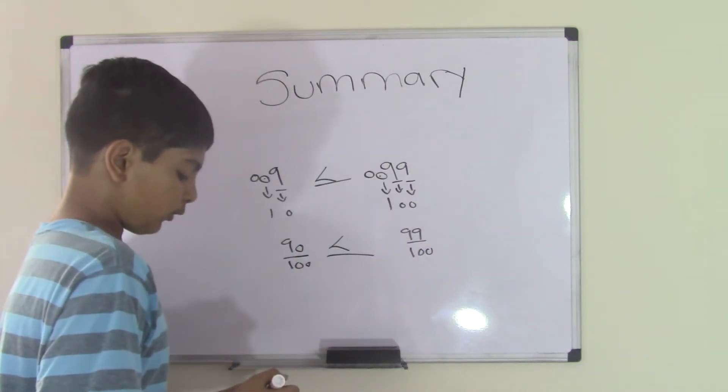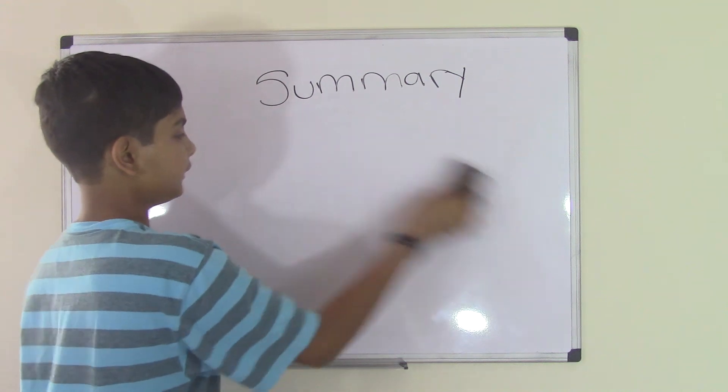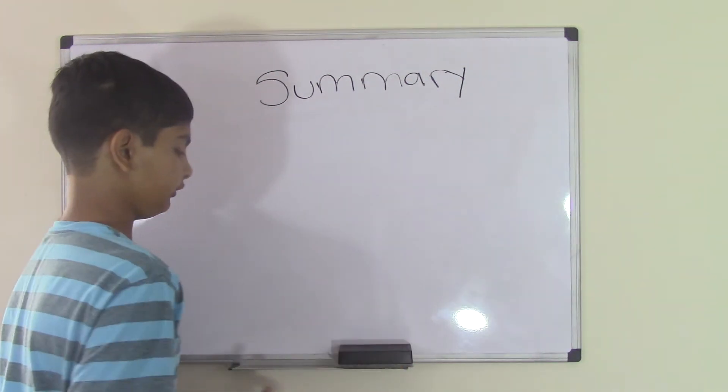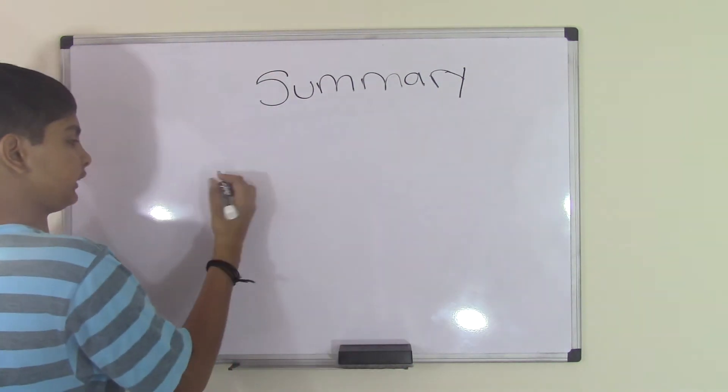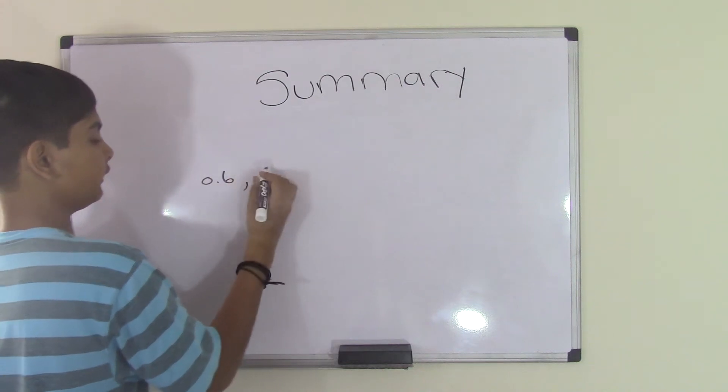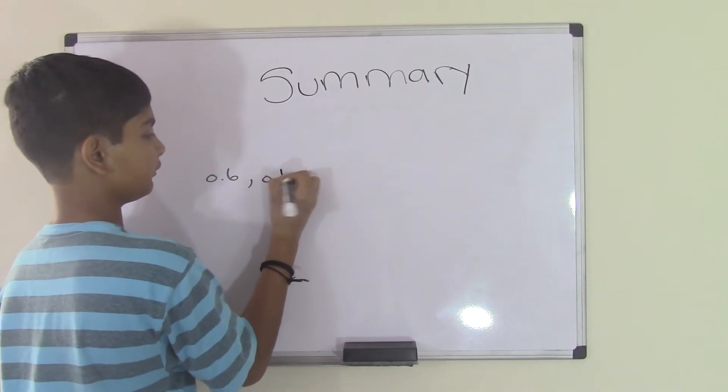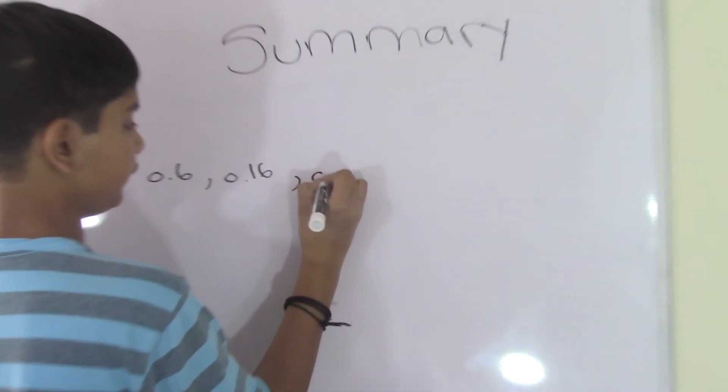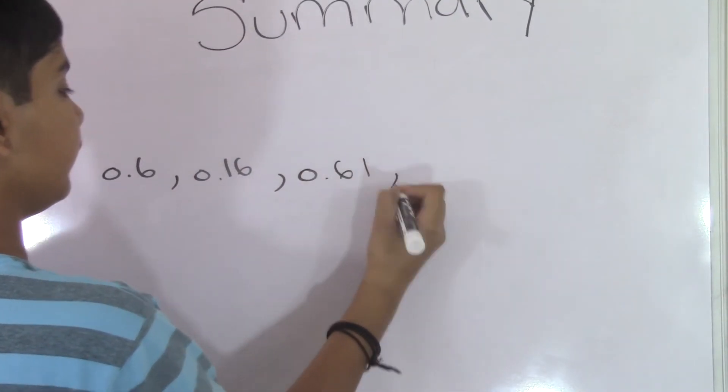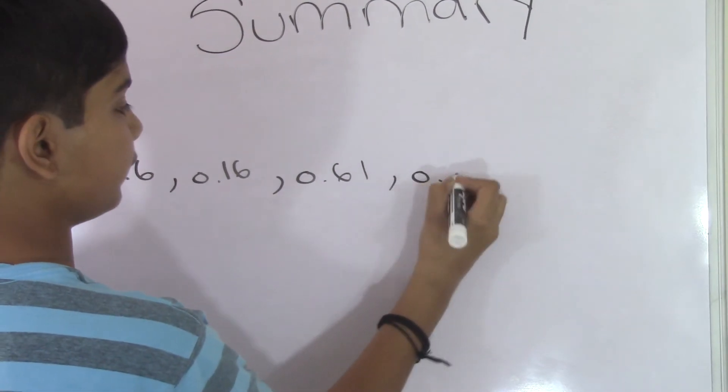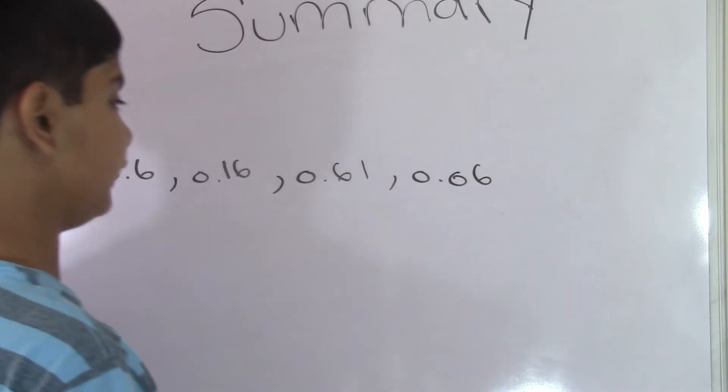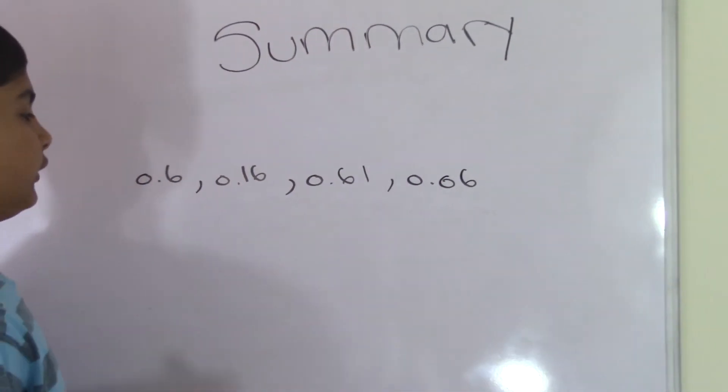Let's do some ordering decimals. When we did the video, we said that we usually get problems such as 0.6, 0.16, 0.61, and 0.06, and we need to put that in order. To do this, we need to change all of these into fractions.